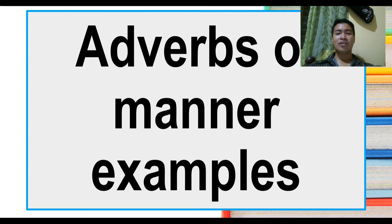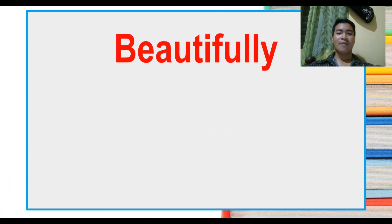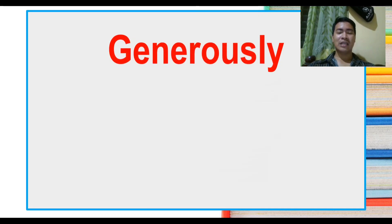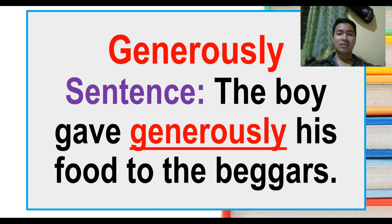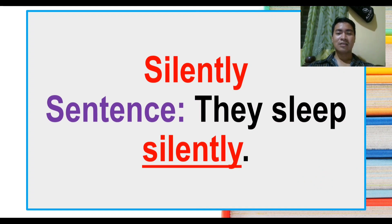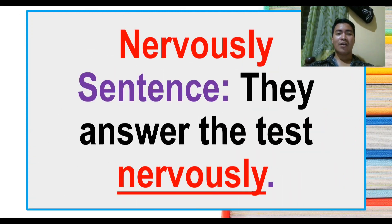Additional examples of adverbs of manner with sentences. Beautifully — the girl sang beautifully with the music. Generously — the boy gave generously his food to the beggars. Patiently — they waited patiently for their orders. Silently — they slept silently. Nervously — they answered the test nervously.